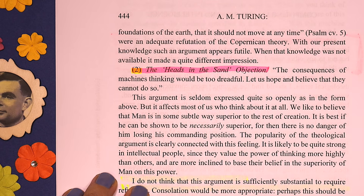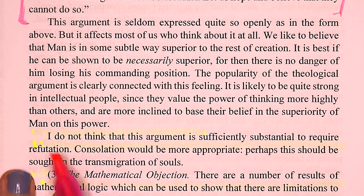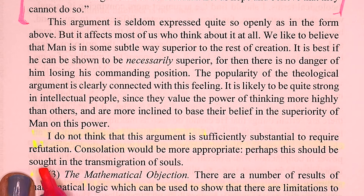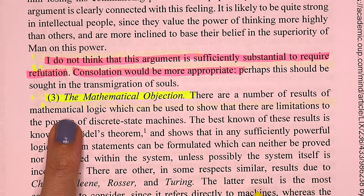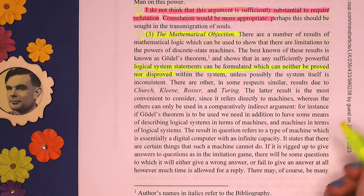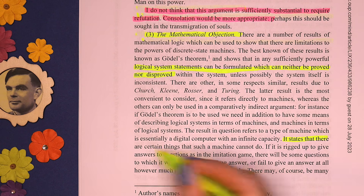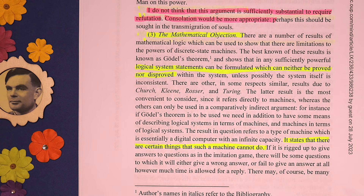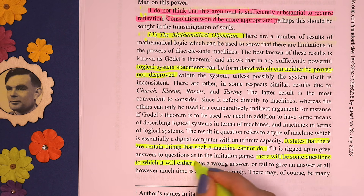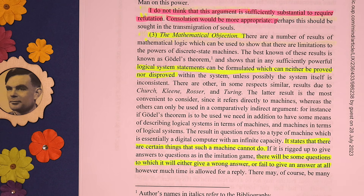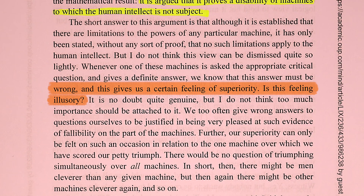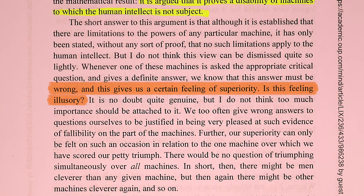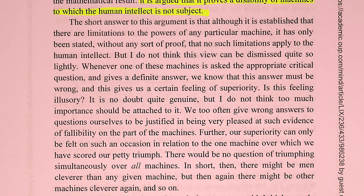But what if this is all too dreadful to think about and we don't want to know about it? That's the heads-in-the-sand objection. In a cold response, Turing says: 'I do not think this argument is sufficiently substantial to require refutation. Consolation would be more appropriate.' Then there's the fundamental limitations of mathematics objection: in our current understanding, there are logical statements that lead to contradictions or paradoxes, and a digital computer will sometimes give a wrong answer or fail to give any answer at all. Turing says the superiority we feel here is actually just an illusion — we too give wrong answers based on our own flawed logical systems.